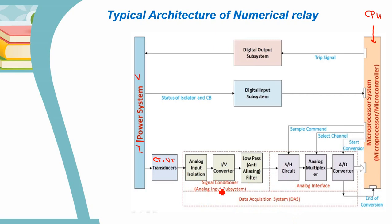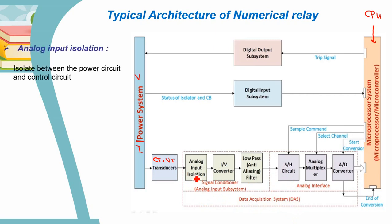First, let's understand signal conditioning. We have the analog input isolation, which is used to isolate between the power circuit and the control circuit of the relay — between the power system and the numerical relay. This isolation can be made by auxiliary isolation devices or an isolation transformer.